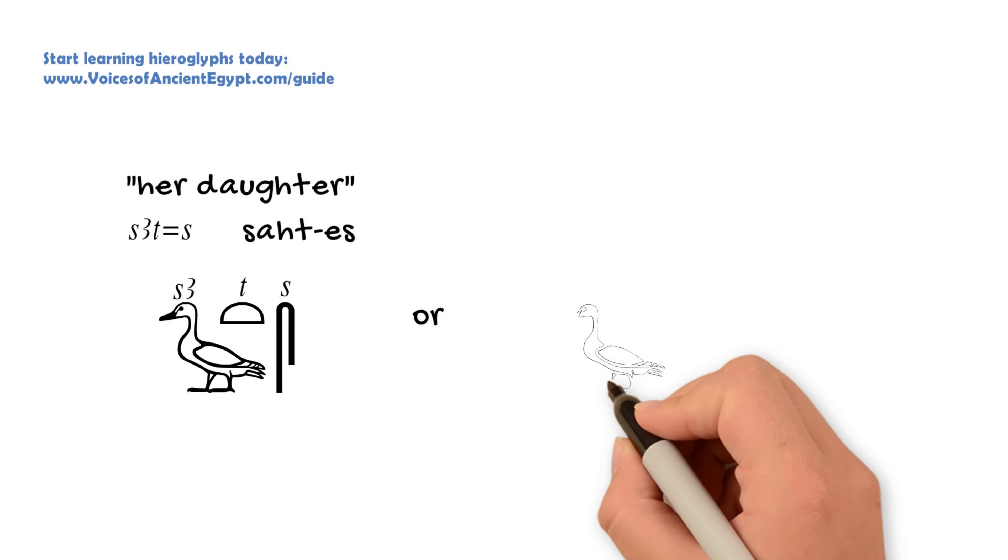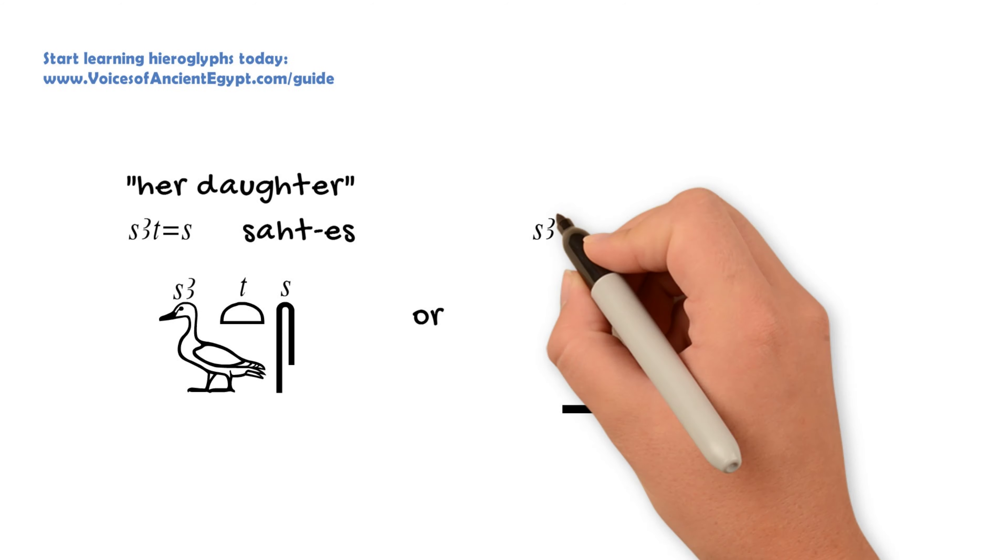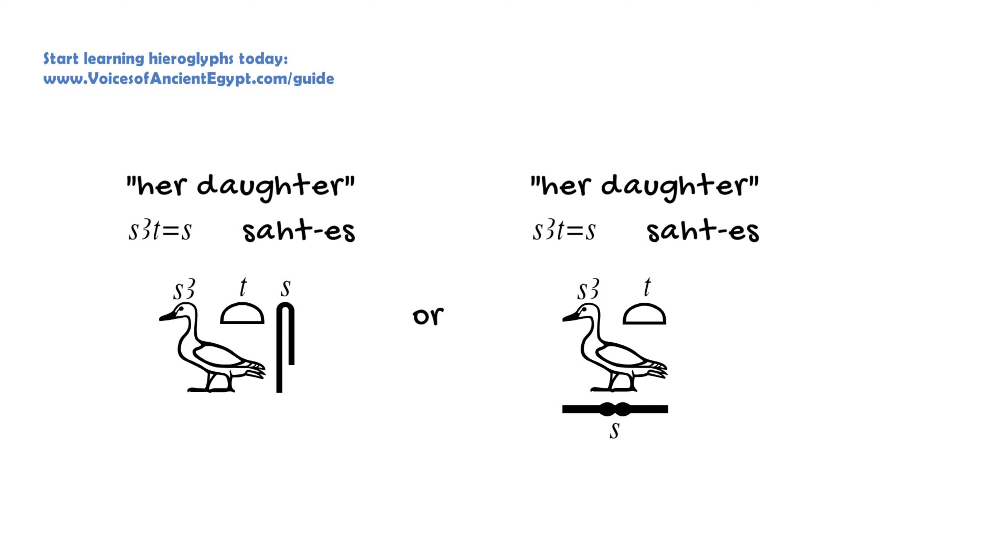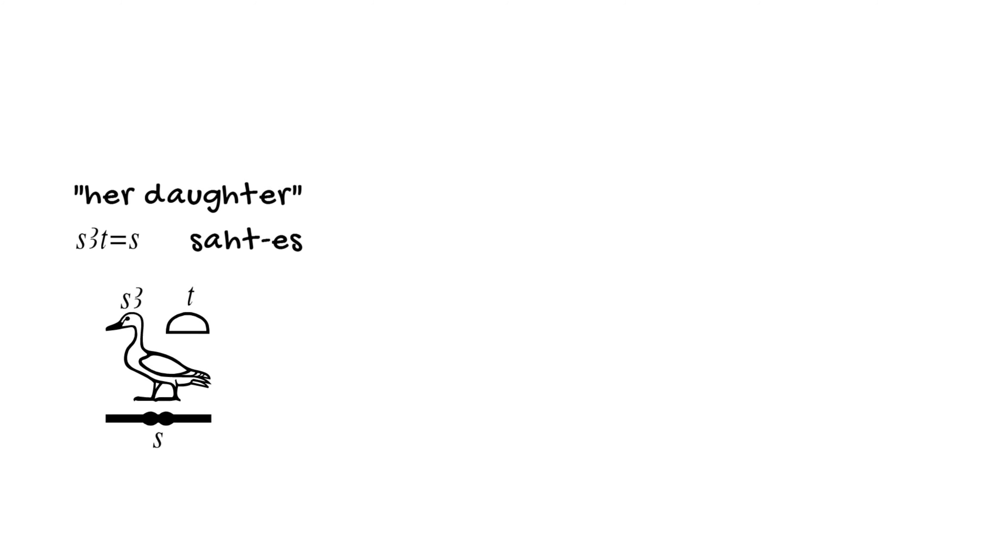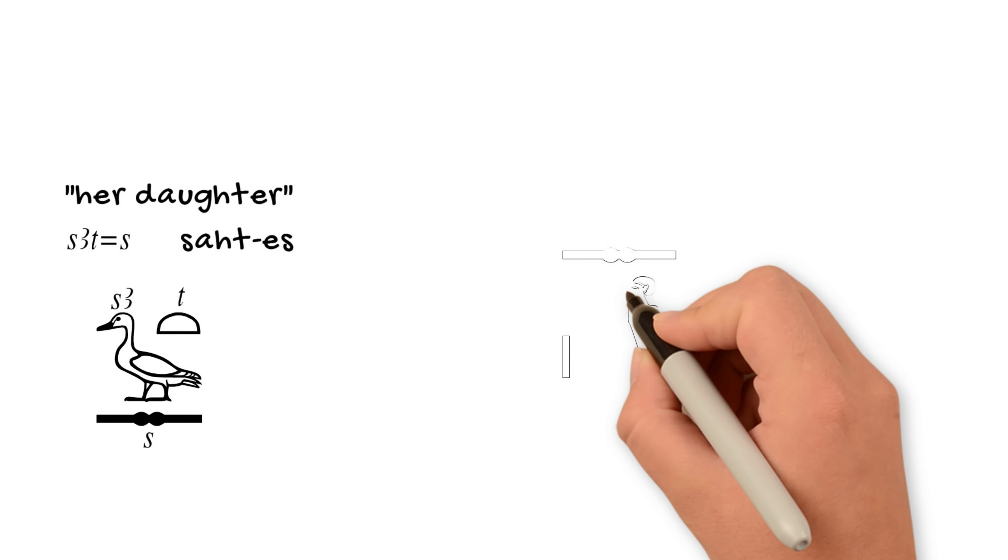However, there are some words that stick to spelling the original way, and they never change. So one of these words, for example, is the word for man, which uses this S, the door bolt S,